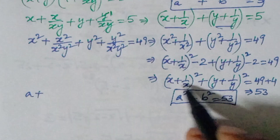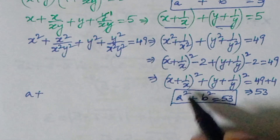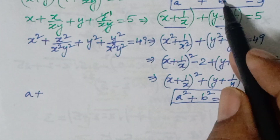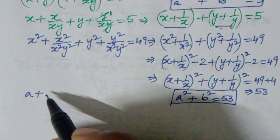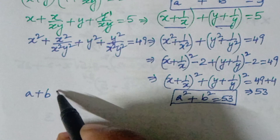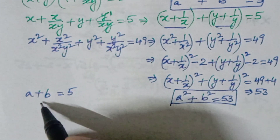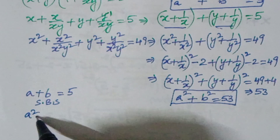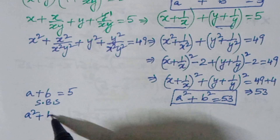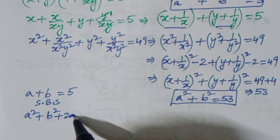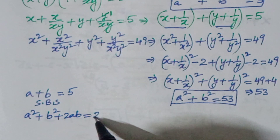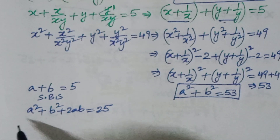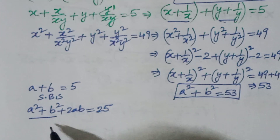We already have x + 1/x = a and y + 1/y = b, and a + b = 5. Squaring both sides: a² + b² + 2ab = 25. Since a² + b² = 53, we substitute: 53 + 2ab = 25.